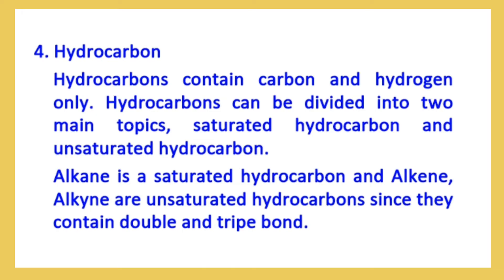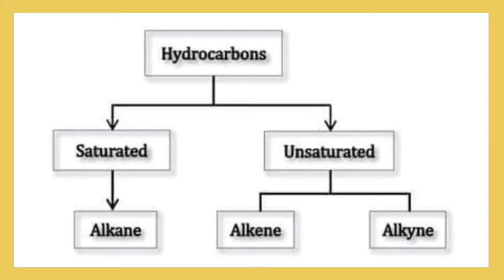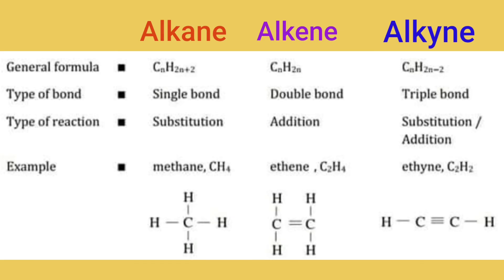Saturated hydrocarbons are alkanes. Unsaturated hydrocarbons include alkenes and alkynes. There are three types of hydrocarbons. We are going to take a look at hydrocarbons in the saturated and unsaturated categories.